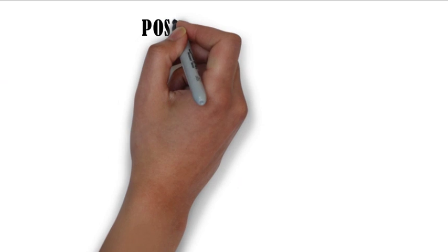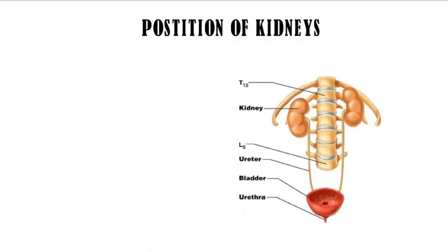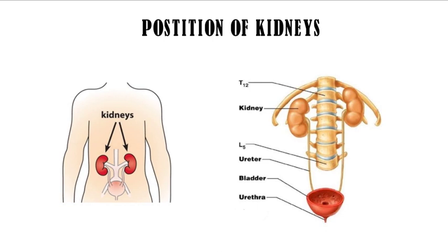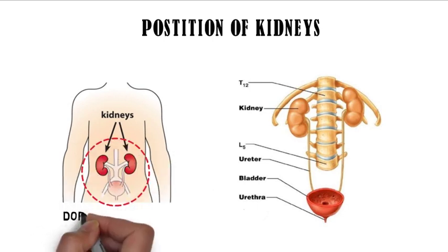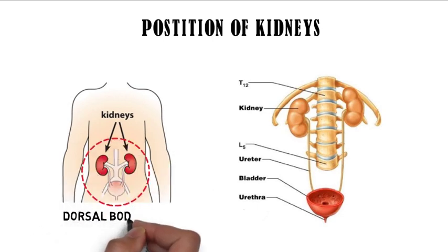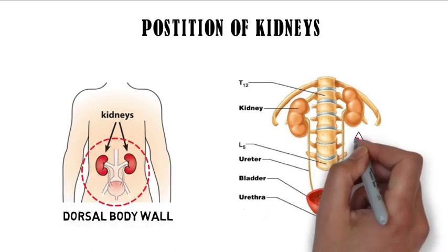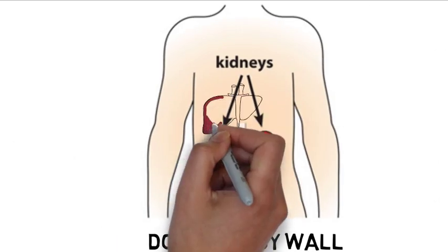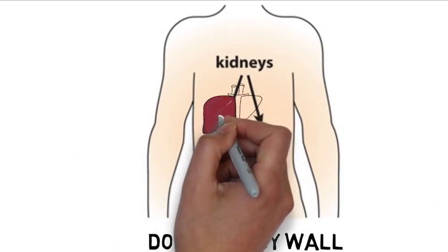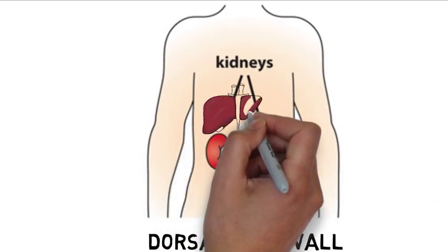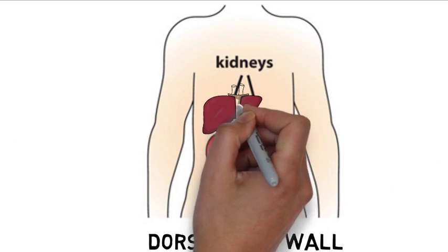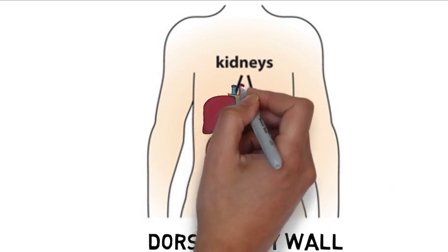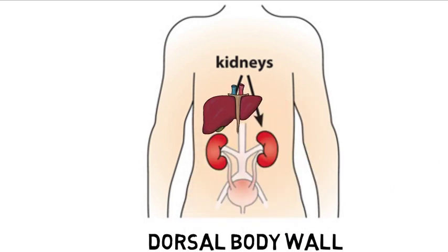Position of kidneys: In humans, the kidneys are located in the abdominal cavity, attached to the dorsal body wall on either side of the vertebral column. The left kidney lies a little higher than the right kidney. The asymmetry within the abdominal cavity is caused by the liver, which results in the right kidney being slightly lower than the left one, while the left kidney is located slightly more medial.